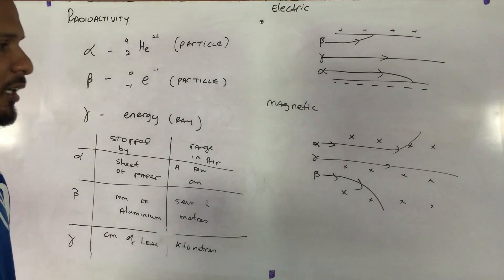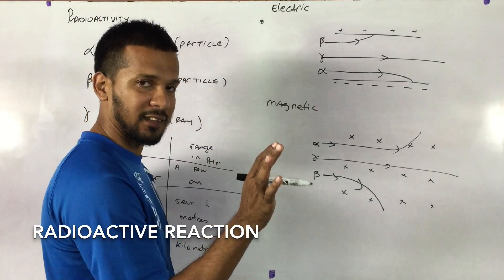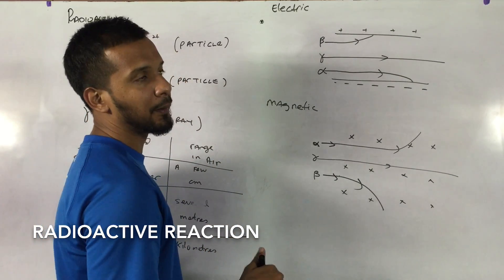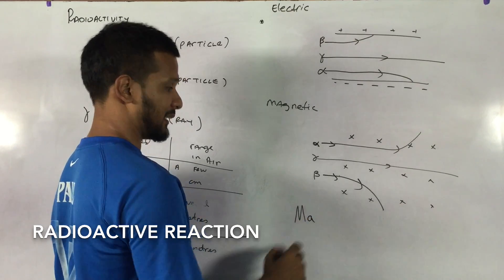We need to also look at what will be in our equation. So let's say a particle. Let's make up a particle. Let's make up a Madrid particle. Let's say it says 231, 92.